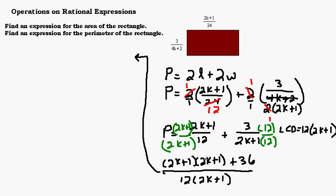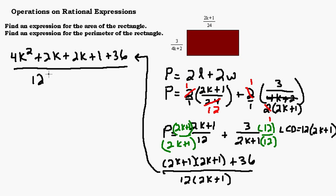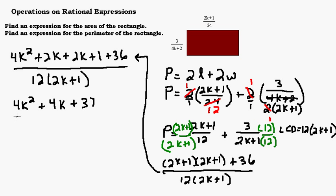So let's do that. 2k times 2k is 4k squared. 2k times 1 is 2k. 1 times 2k is 2k. 1 times 1 is 1. Don't forget the plus 36. That's all over 12 times the quantity 2k plus 1. In the numerator, I can simplify by adding the k terms together and the constants: 2k plus 2k is 4k, and 1 plus 36 is 37. So now we have 4k squared plus 4k plus 37, all over 12 times the quantity 2k plus 1.